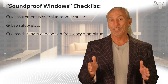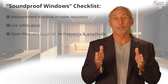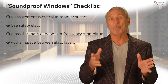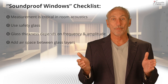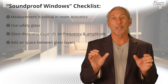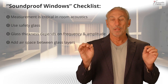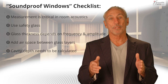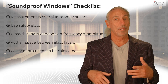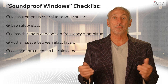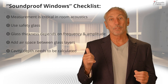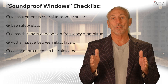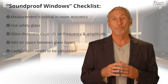We're going to use two pieces of glass in our window with an air space between them. How big the air space is and how thick the glass is depends on the frequency and amplitude of noise. The depth of the cavity also matters. If we have a lot of low frequency energy — a bass player in the live room, a drummer using the kick drum — we don't want it to bleed into the control room, so we're going to use a thicker air space. All that has to be calculated.